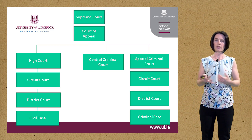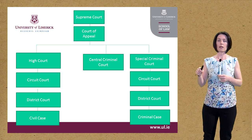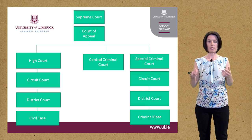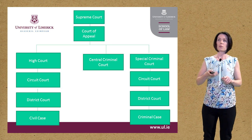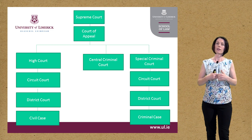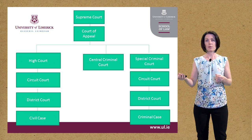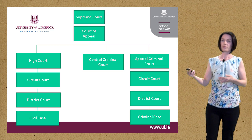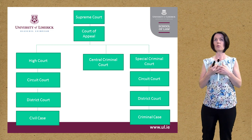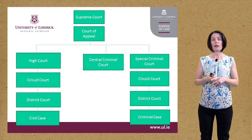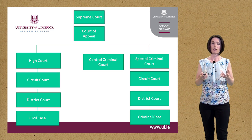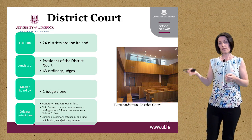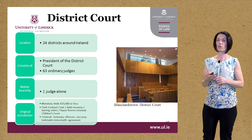The Court of Appeal is a new level within our court structure, inserted by constitutional amendment between the High Court and the Supreme Court. Its main function is appellate jurisdiction, and it was primarily brought in to reduce the backlog of cases going to the Supreme Court. Now, appeals from the High Court typically go to the Court of Appeal rather than the Supreme Court, allowing the Supreme Court to deal with cases of constitutional or public interest.